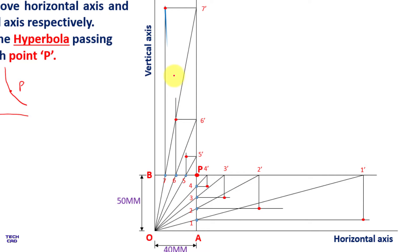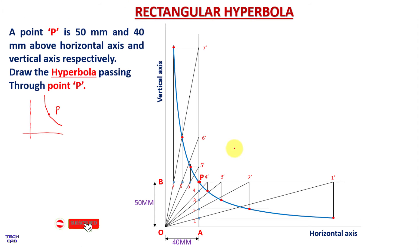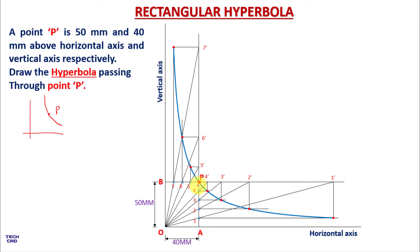The hyperbola is drawn through all these points passing through point P, which is 50 mm above the horizontal axis and 40 mm above the vertical axis. I hope you understand this. If you have any query, you can comment in the comment section. Thanks for watching. Be happy.